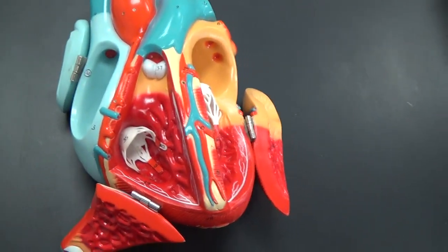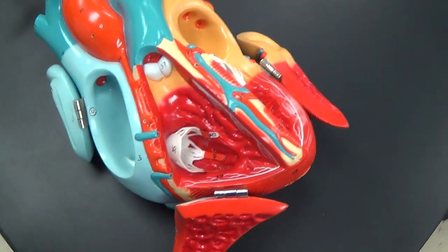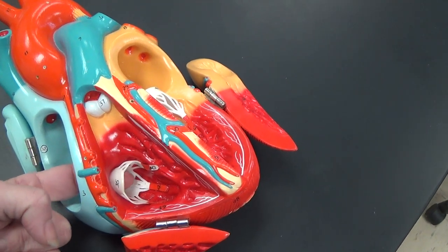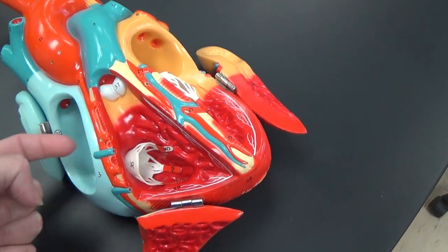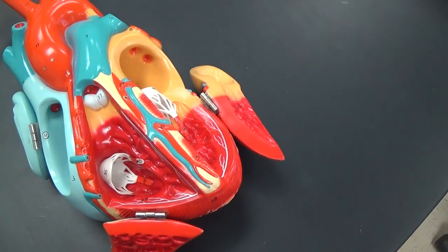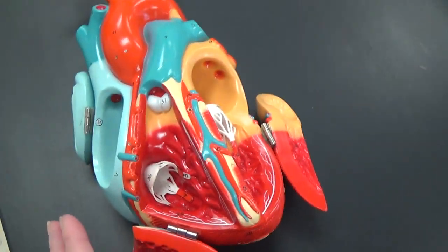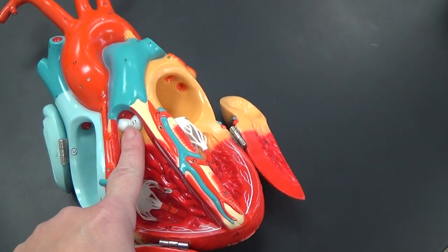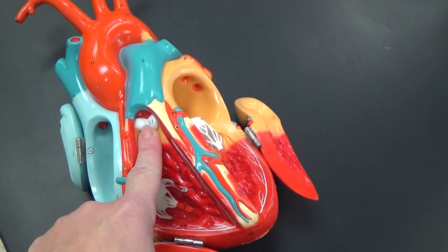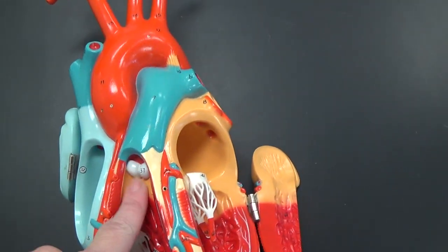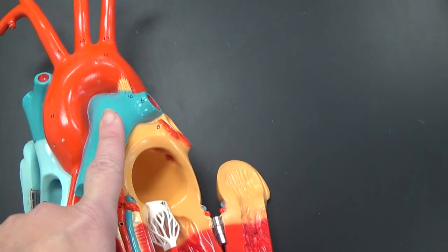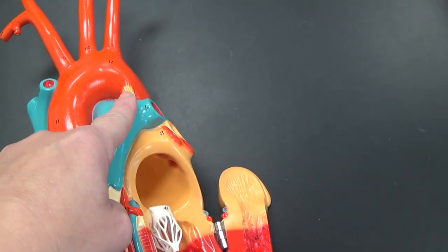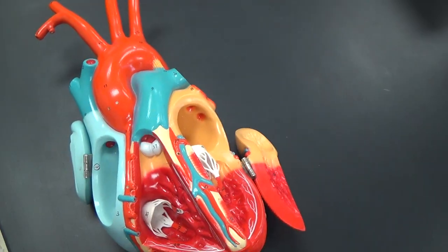Looking on the right side, we have the valve right through here. This is the tricuspid valve on the right side. Blood will be pushed into the right ventricle. When the heart contracts, it will push blood up to here. This valve is the pulmonary semilunar valve that sends blood to the pulmonary trunk. This is the pulmonary artery that breaks into the left and right pulmonary arteries.